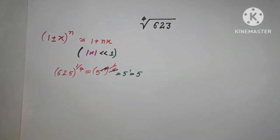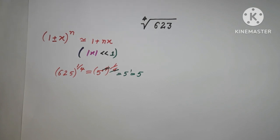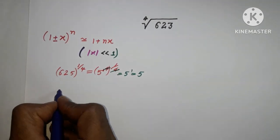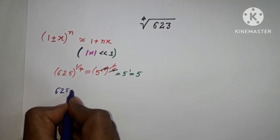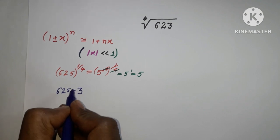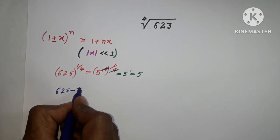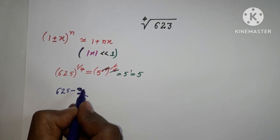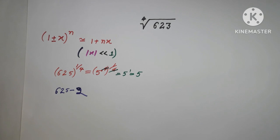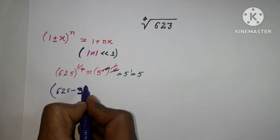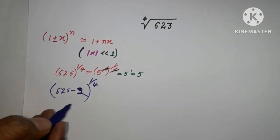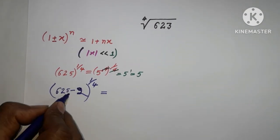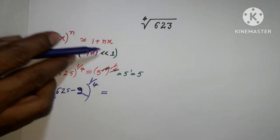So 623 can be written as 625 minus 2, raised to the power 1/4. This is greater than 1, but I need to make this less than 1.